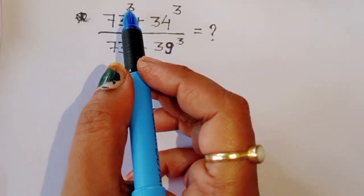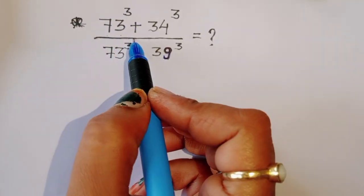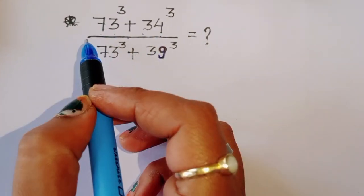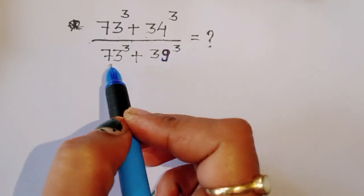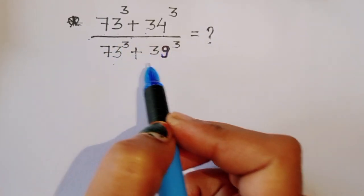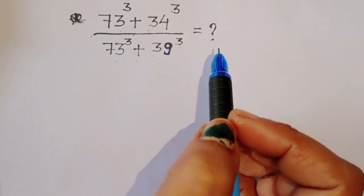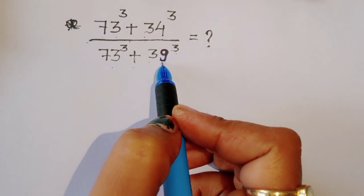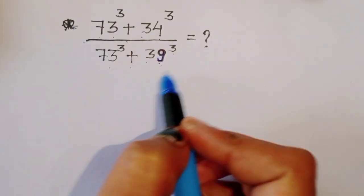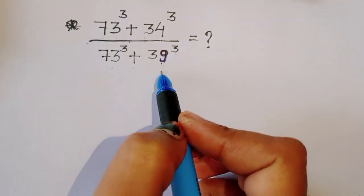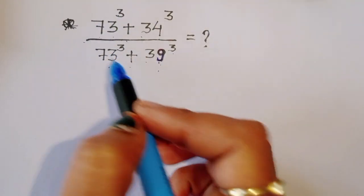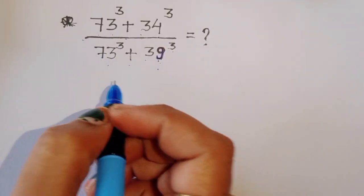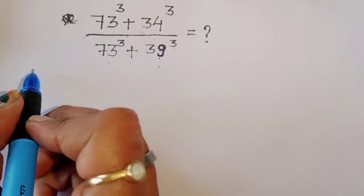The question is: given (73³ + 34³) divided by (73³ + 39³), we have to find the value of this expression. Let's see the solution.